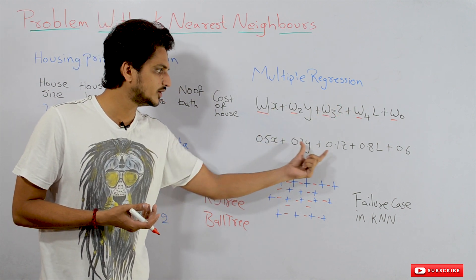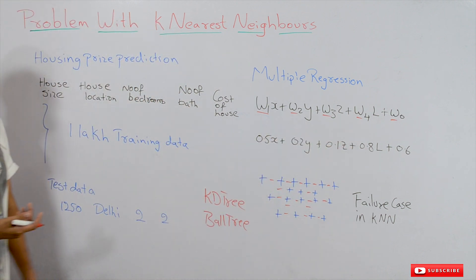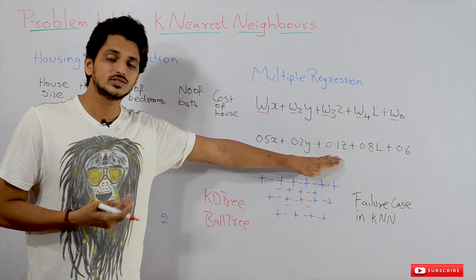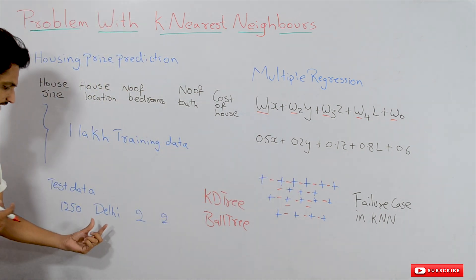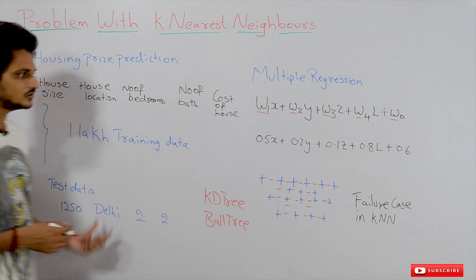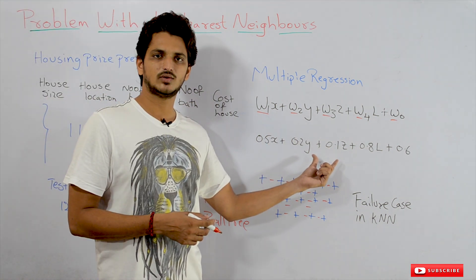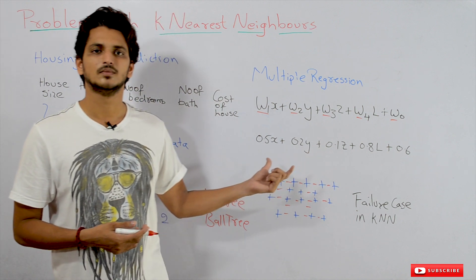We get an equation like: 0.5x + 0.2y + 0.1z + 0.8l + 0.6. We use this equation for predicting our testing data. For the testing data, we substitute the values into this equation and get the predicted value.